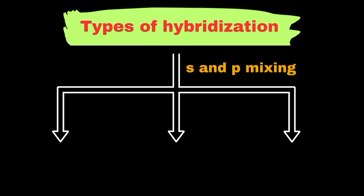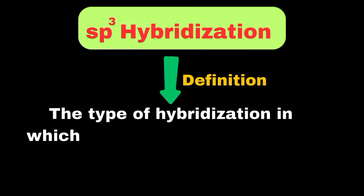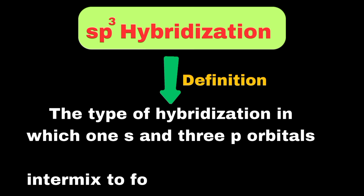There are three common types of hybridization based on the mixing of s and p orbitals: sp3, sp2, and sp hybridization. sp3 hybridization is a type of hybridization in which 1s and 3p atomic orbitals are intermixed to form four sp3 hybridized orbitals.